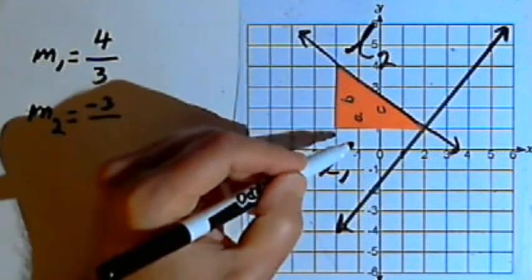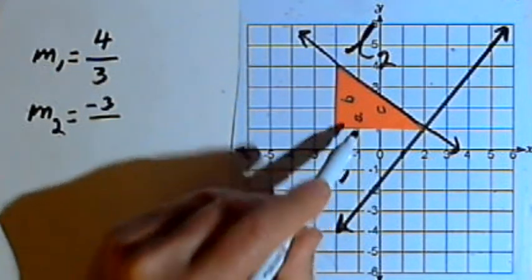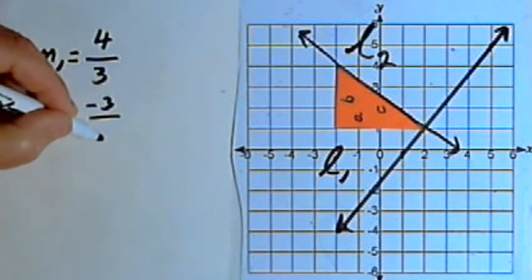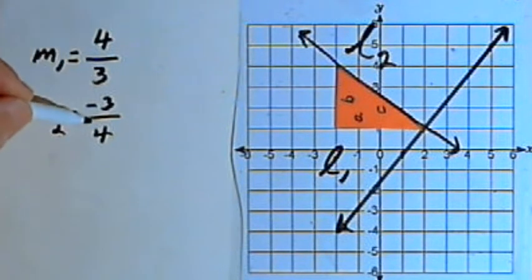And then the run, the distance we're traveling from left to right, is the same as side A, and that's 4 units. So the original slope was 4 over 3. The slope of the perpendicular line was negative 3 over 4.